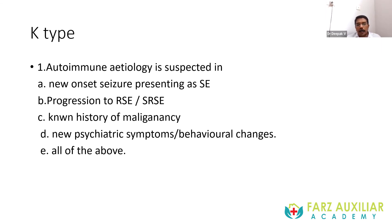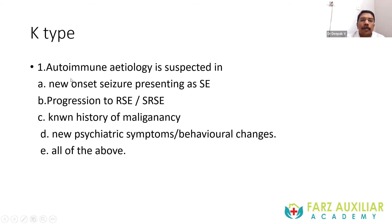Moving to K-type questions, where multiple answers can be correct — essentially true or false type. First K-type question: autoimmune etiology is suspected in — a new onset seizure presenting as status seizure, progression to refractory or super-refractory status seizure, known history of malignancy, new psychiatric symptoms or behavioral changes, or all of the above. The correct answer is all of the above, because autoimmune etiology is one of the most common causes of refractory status seizures.